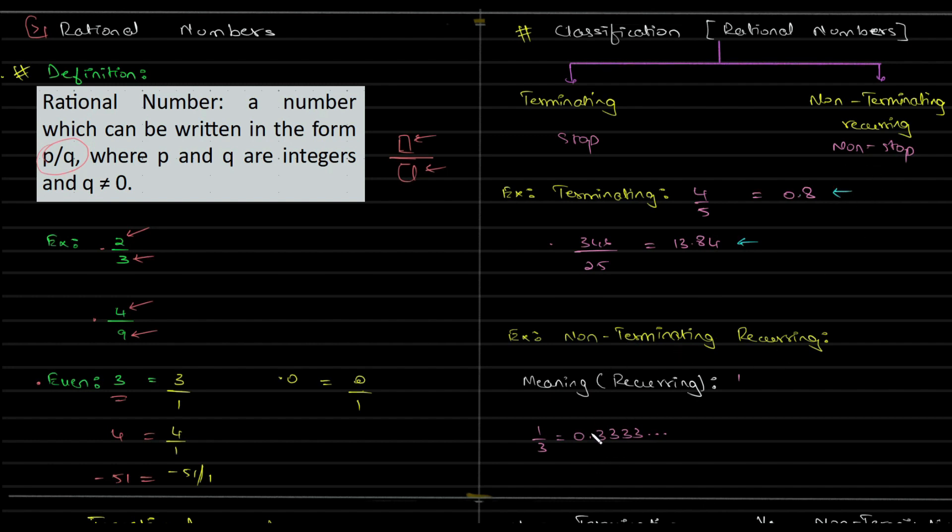But in non-terminating recurring numbers, there is no stop to that. The recurring part is nothing but the repetition. You have a definite repetition. Here we are definite that 3 will occur repeatedly.